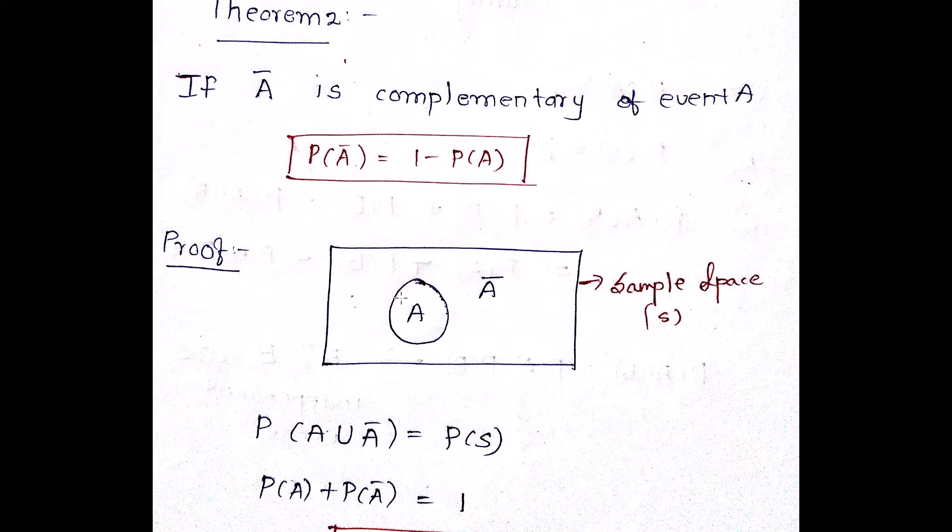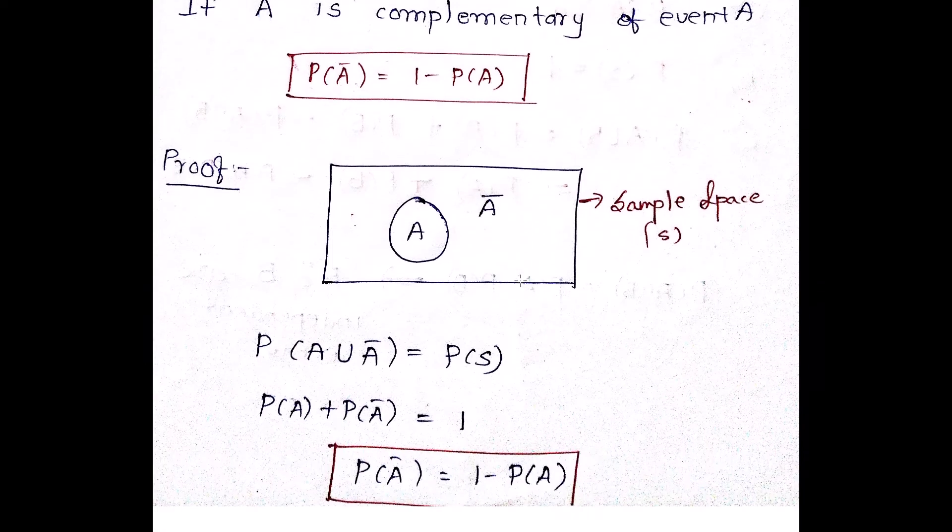So what I mean to say is that if in this entire sample space, I have this as A, then of course the remaining space is going to be not of A, that is A bar. And hence we have this formula P of A bar is given as 1 minus P of A. That is P of A plus P of A bar is equal to 1.